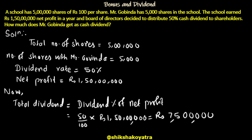5 lakh shares. Mr. Govinda has 5,000 shares. Now students, the school has 1.5 lakh net profit. Total number of shares will be 5 lakh shares.